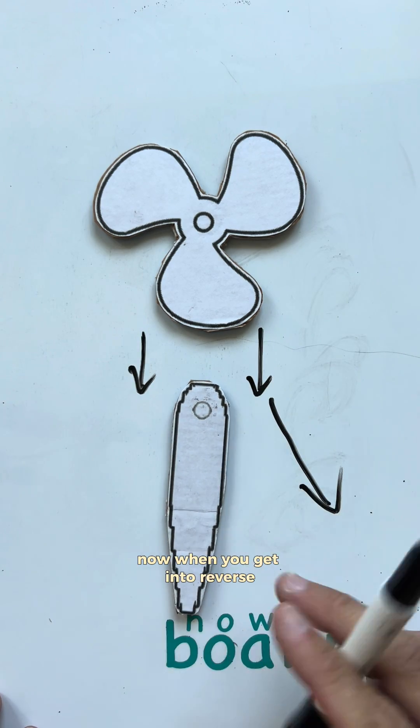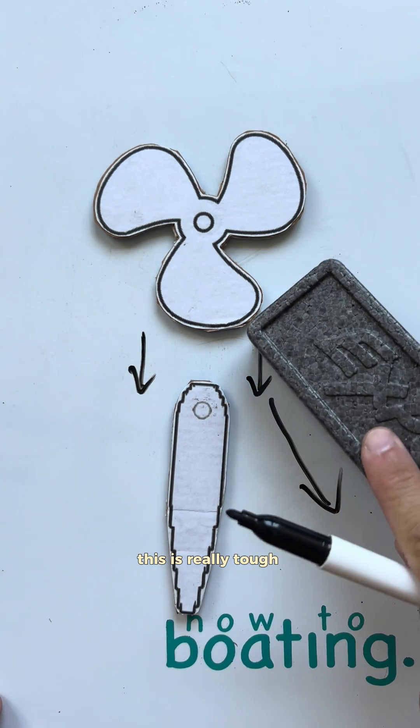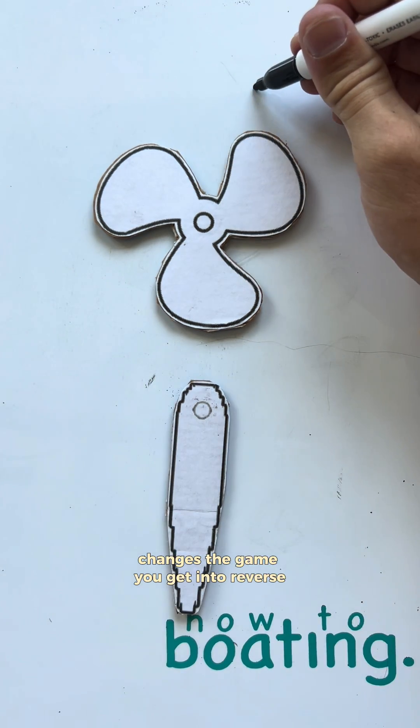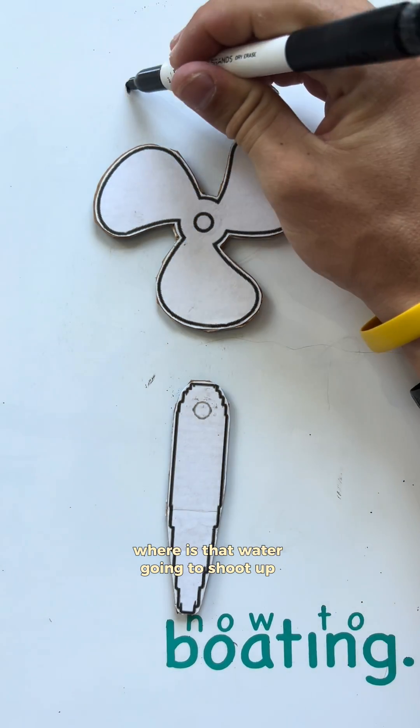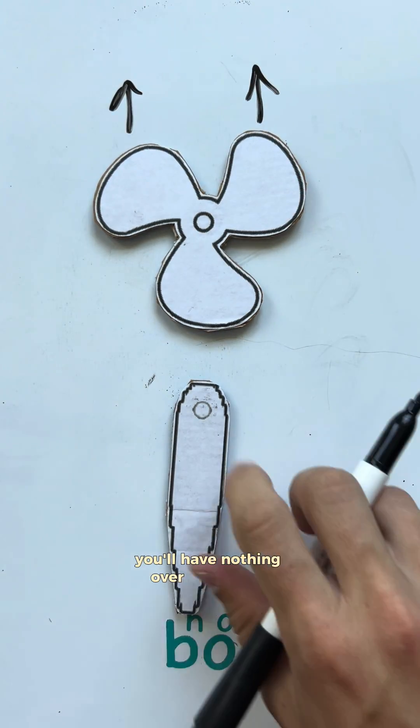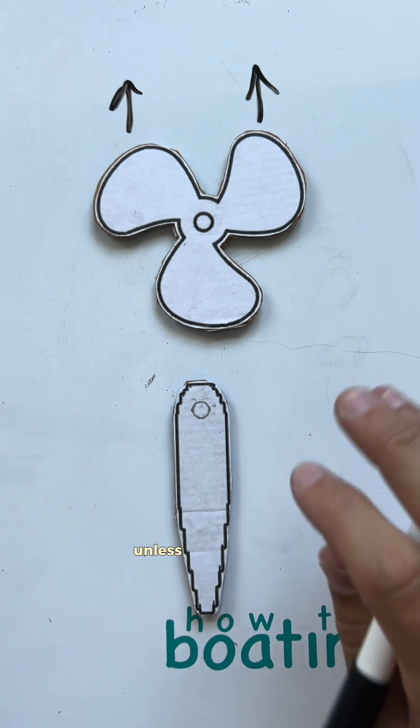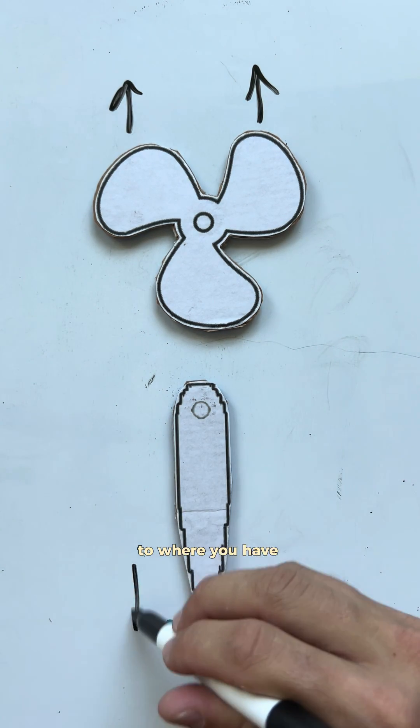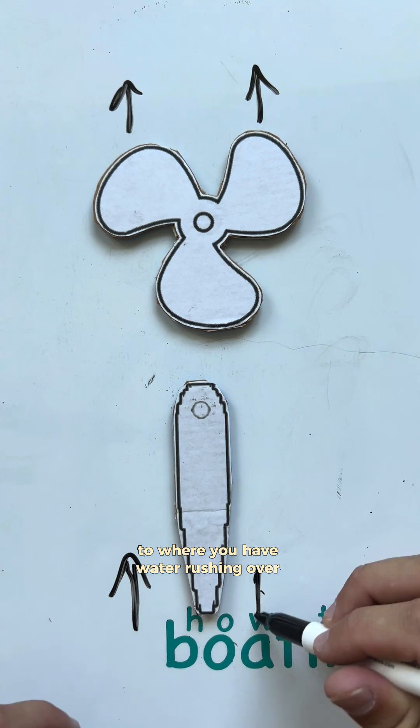Now, when you get into reverse, this is really tough. It changes the game. If you get into reverse, where is that water going to shoot? Up here. You'll have nothing over the rudder, so you cannot steer unless you build up momentum in reverse to where you have water rushing over this way.